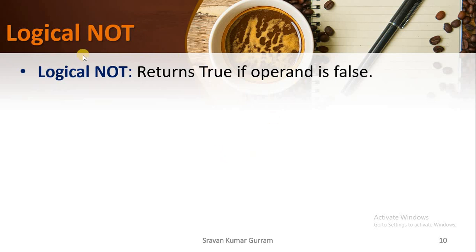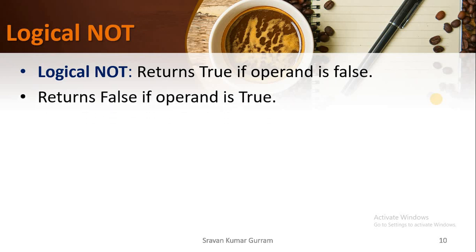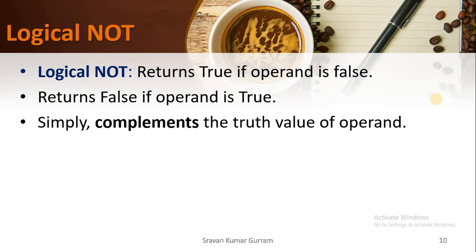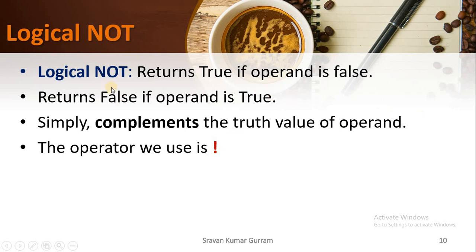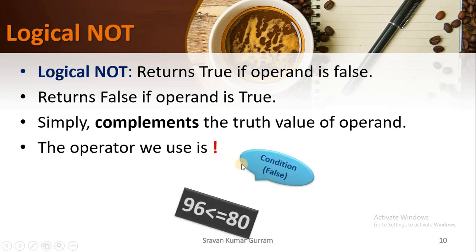The third one is logical NOT. It returns true if the operand is false, and vice versa — it returns false if the operand is true. Simply put, logical NOT complements the truth value of an operand: true becomes false, and false becomes true. The operator used to implement logical NOT is the exclamation mark (!). This is called the logical NOT operator.